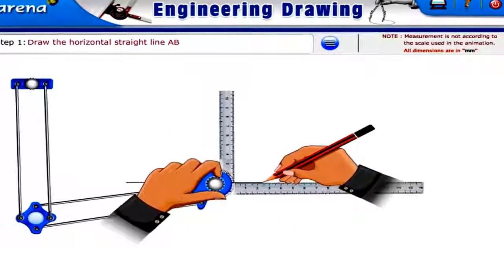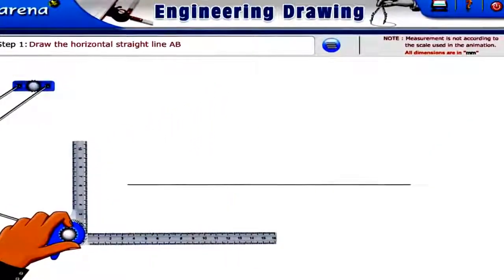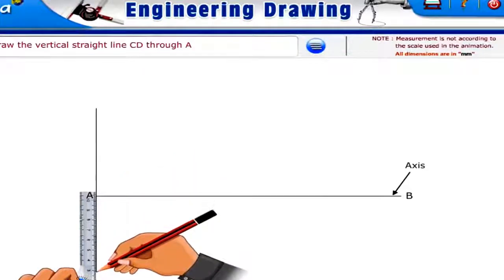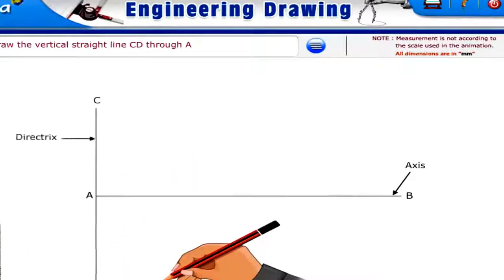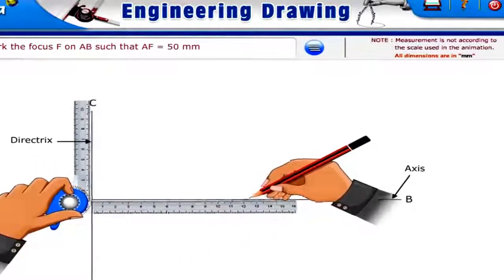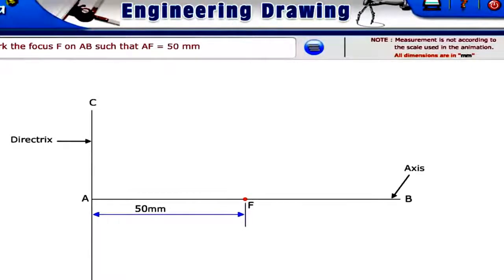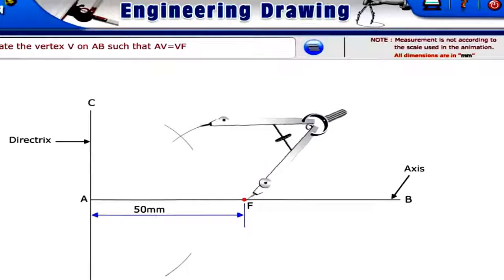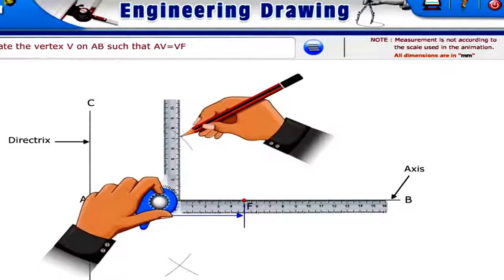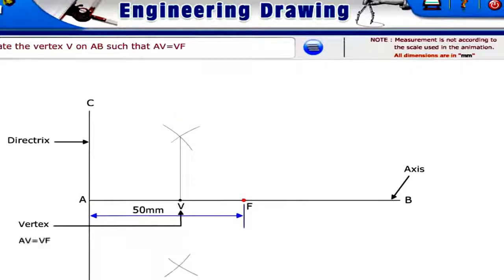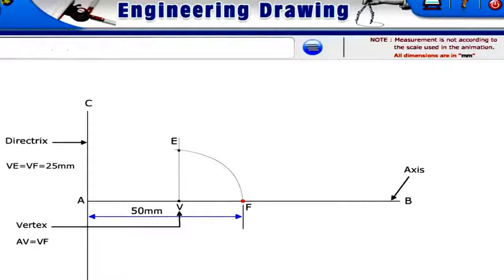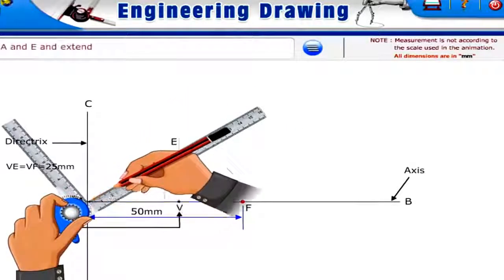The constructional procedure is as follows. Draw the horizontal straight line AB representing the axis of the parabola. Draw the vertical straight line CD through A, representing the directrix of the parabola. Mark the focus F on AB such that AF equals 50 mm. Locate the vertex V on AB such that AV equals VF equals 25 mm. Draw a line VE perpendicular to AB such that VE equals VF equals 25 mm. Join A and E and extend.